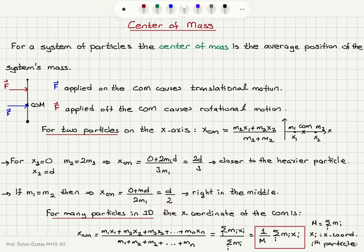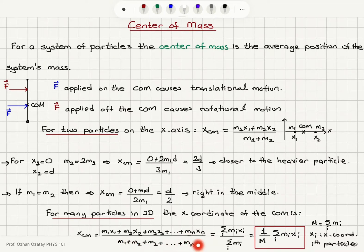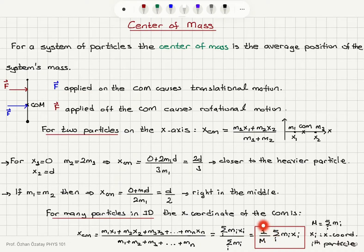Generalizing to many particles in three dimensions, the x-coordinate of the center of mass is m1*x1 plus m2*x2 plus m3*x3 up to mn*xn, divided by the total mass m1 plus m2 plus m3 up to mn. This is the sum over i of mi*xi divided by the total mass M, which equals (1/M) times the sum over i of mi*xi.